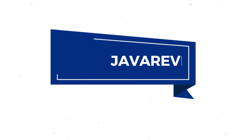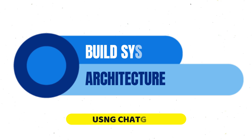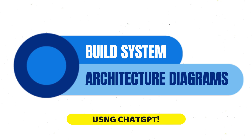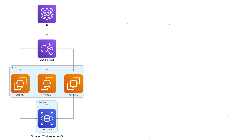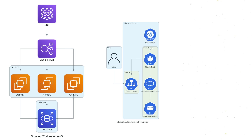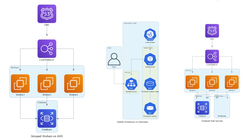Hello everyone, I hope you are well. In today's video, we will see how we can create system architecture diagrams which are more advanced versions than our previous diagrams. We will create group workers on AWS, stateful architecture on Kubernetes, and clustered web services, with the help of ChatGPT.